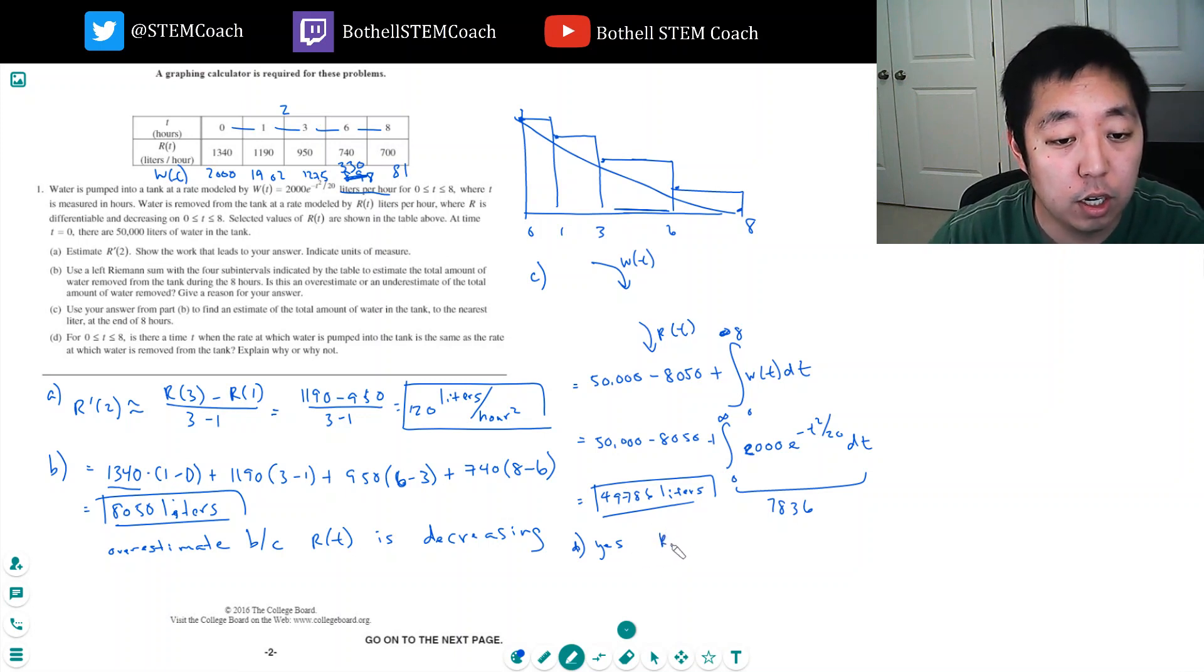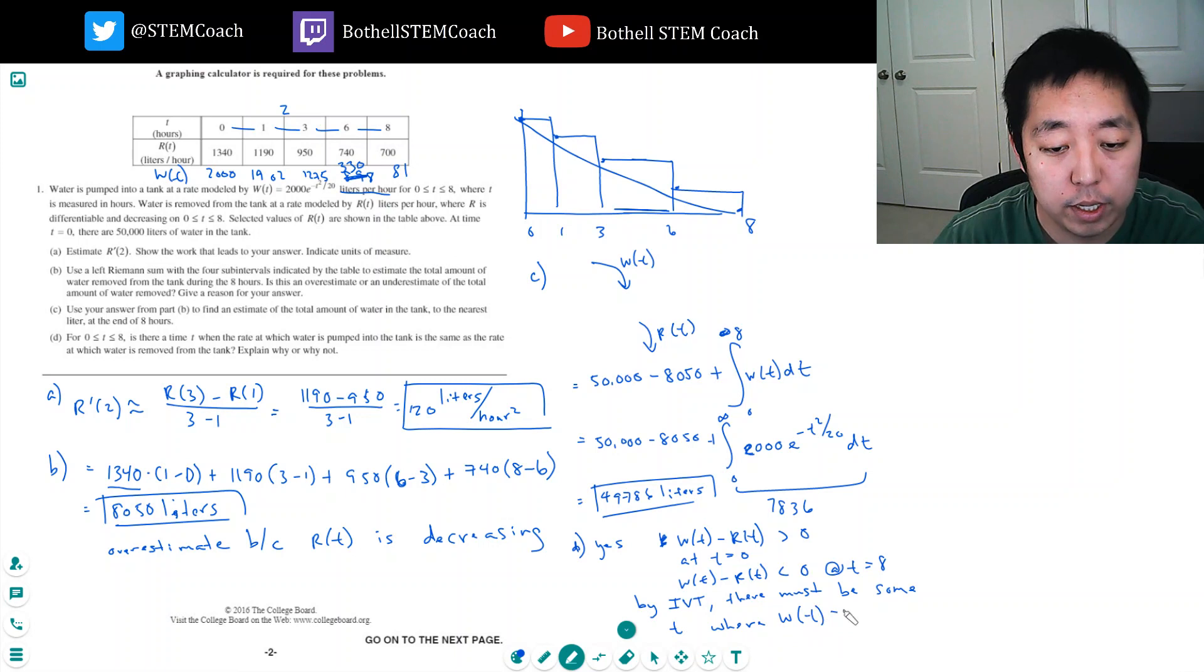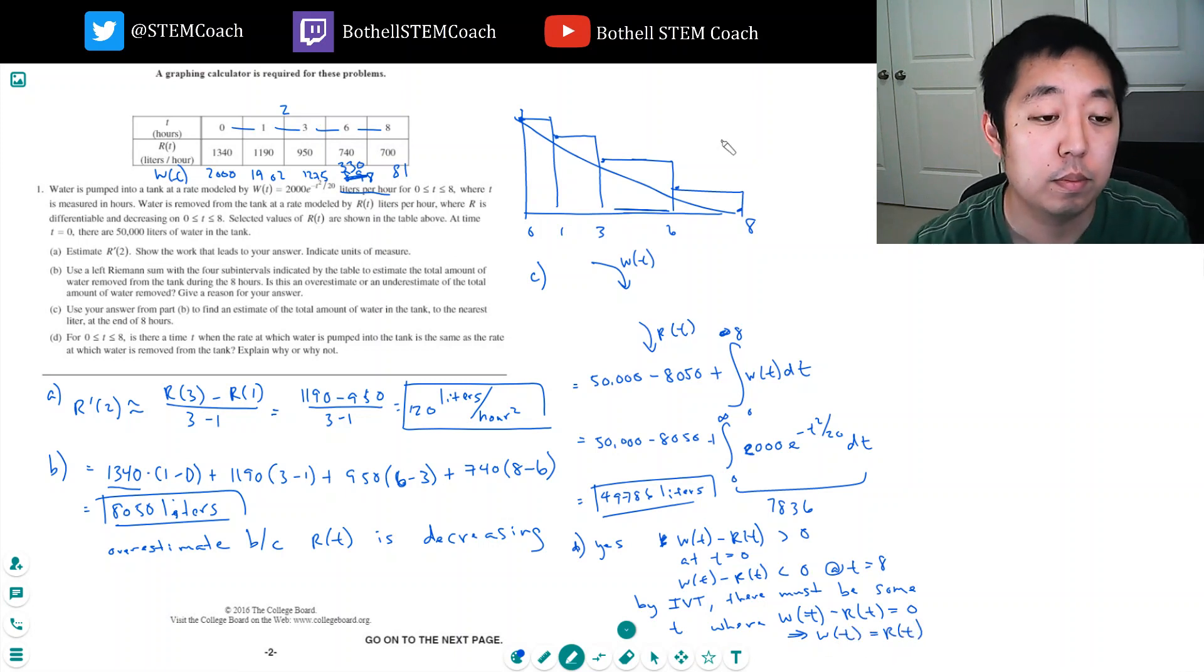Consider w(t) minus r(t) is greater than 0 at t equals 0, and w(t) minus r(t) is less than 0 at t equals 8. Hence, by the intermediate value theorem, there must be some t where w(t) minus r(t) equals 0, which implies w(t) equals r(t).